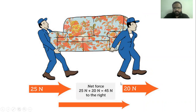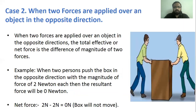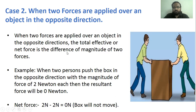So when the two forces are applied in the same direction, the net force is the addition of the magnitudes of both forces. Now case two: when two forces are applied over an object in opposite directions, the net force is the difference of the two forces. For example, when two persons push a box in opposite directions with two Newton each, the resultant force will be zero Newton.